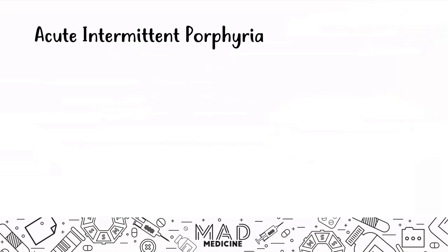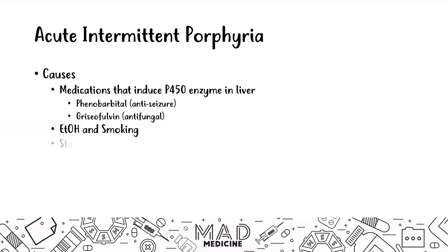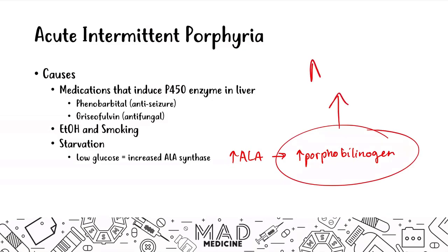What can cause acute intermittent porphyria to get worse? It can be caused by medications that induce the CYP450 enzyme in the liver, like phenobarbital (an anti-seizure drug) and griseofulvin (an antifungal drug). It can also be caused by alcohol, smoking, and starvation. When you have low glucose, you increase the activity of ALA synthase, which produces more ALA and therefore more porphobilinogen, worsening symptoms.